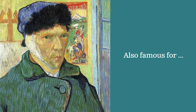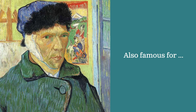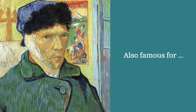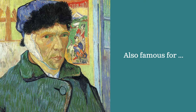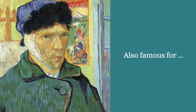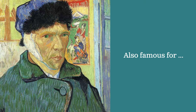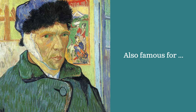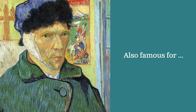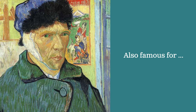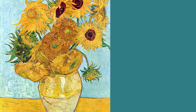Even though van Gogh is very famous for his paintings, he's also famous for another reason — he's the artist that cut off part of his ear. Van Gogh suffered from depression his whole life, and as an adult one evening he was in a rage and cut off part of his ear. After that evening, all of his self-portraits included a bandage over his ear.